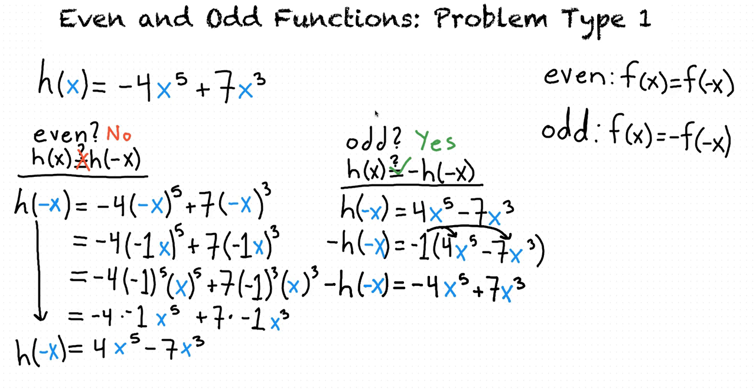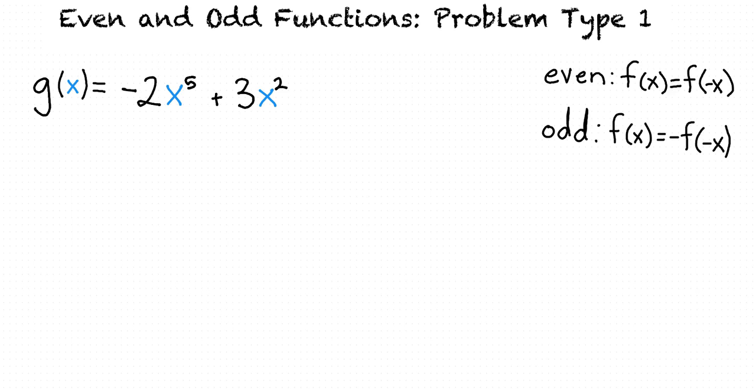So what if we had the function g(x) equals negative 2x to the fifth plus 3x squared? Is that even or odd? Well, it is a polynomial, so we can tell by the exponents. Are the exponents even or odd? Well, 5 is odd, but 2 is even. Does that mean it's neither even nor odd? Exactly.